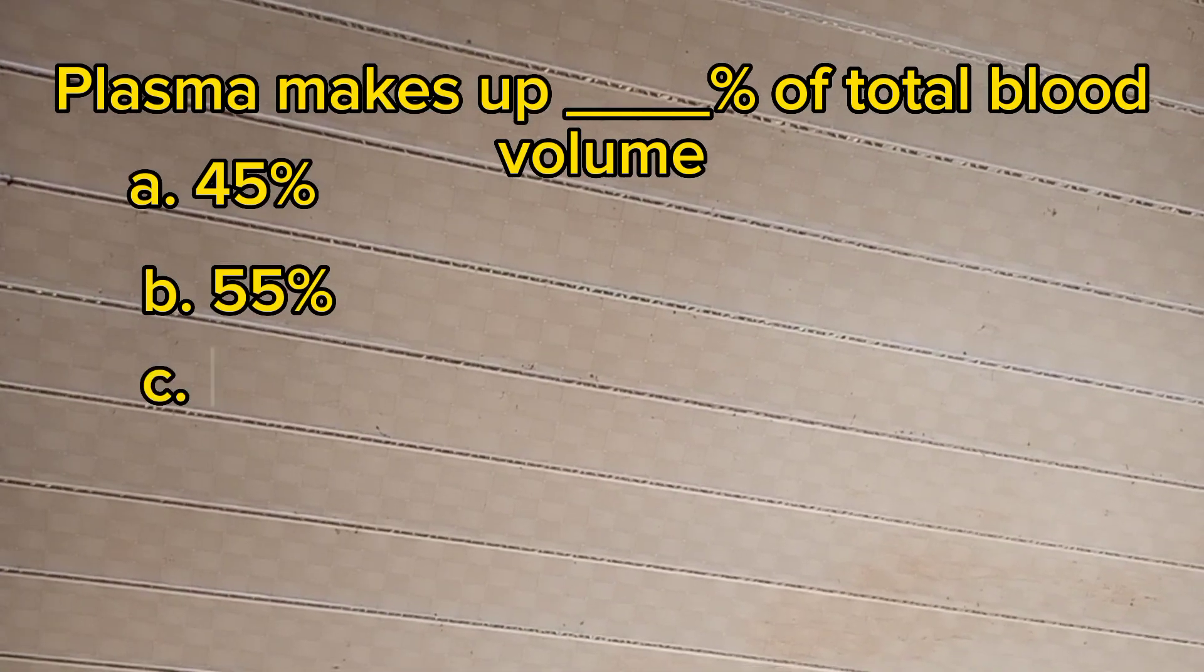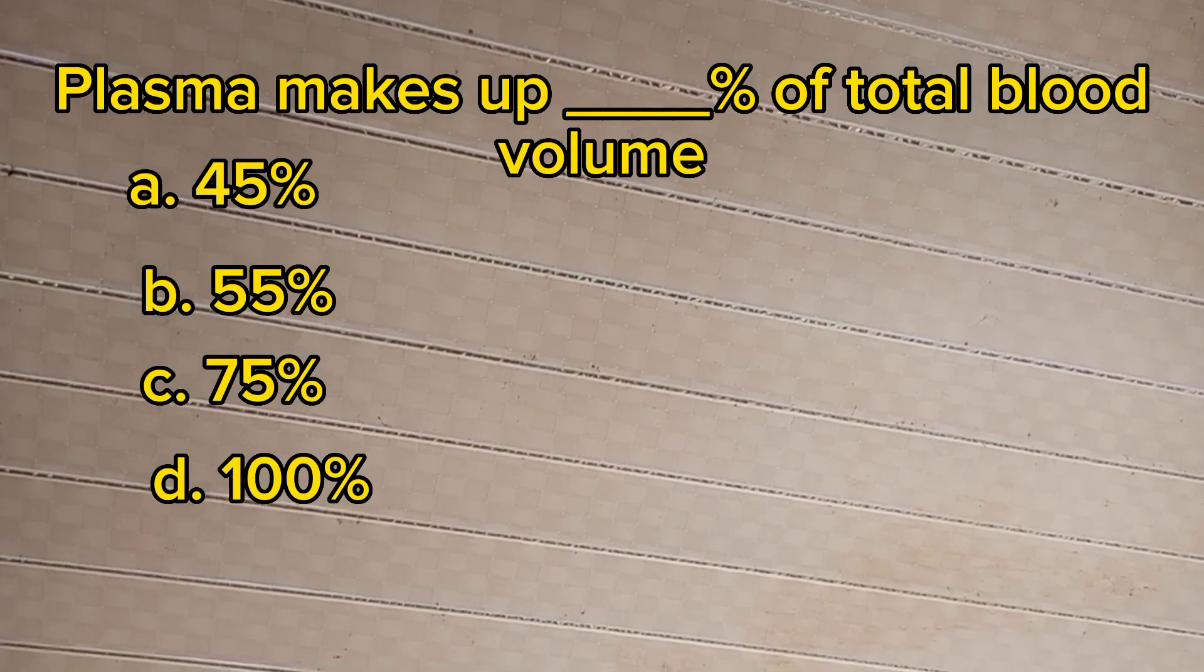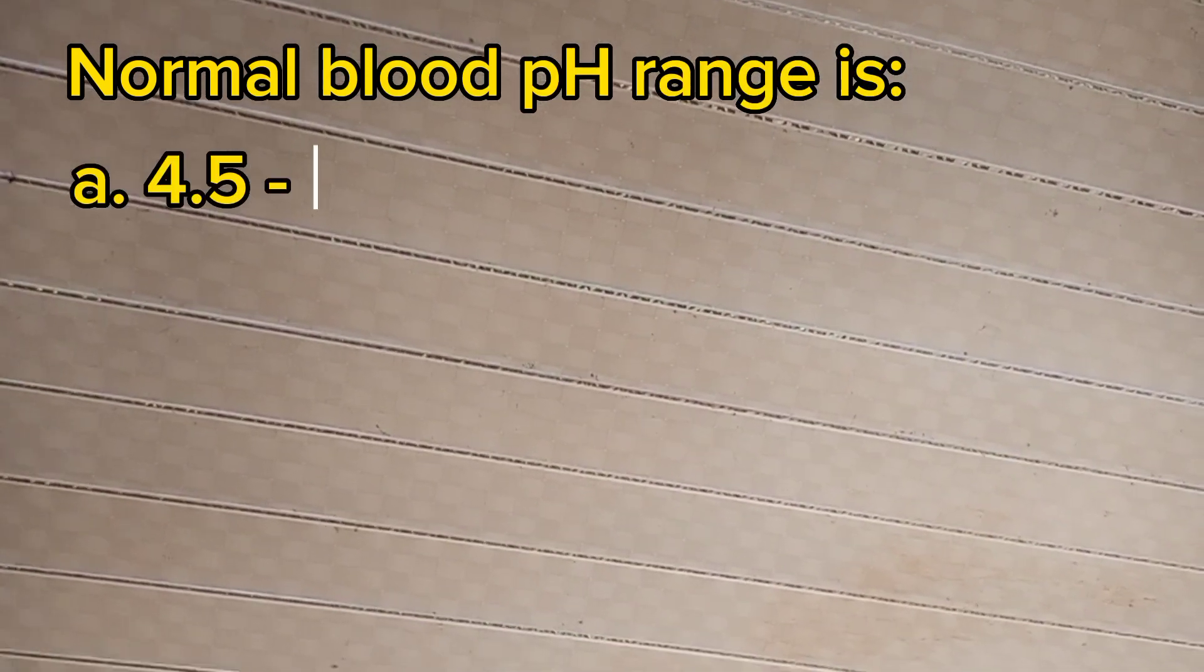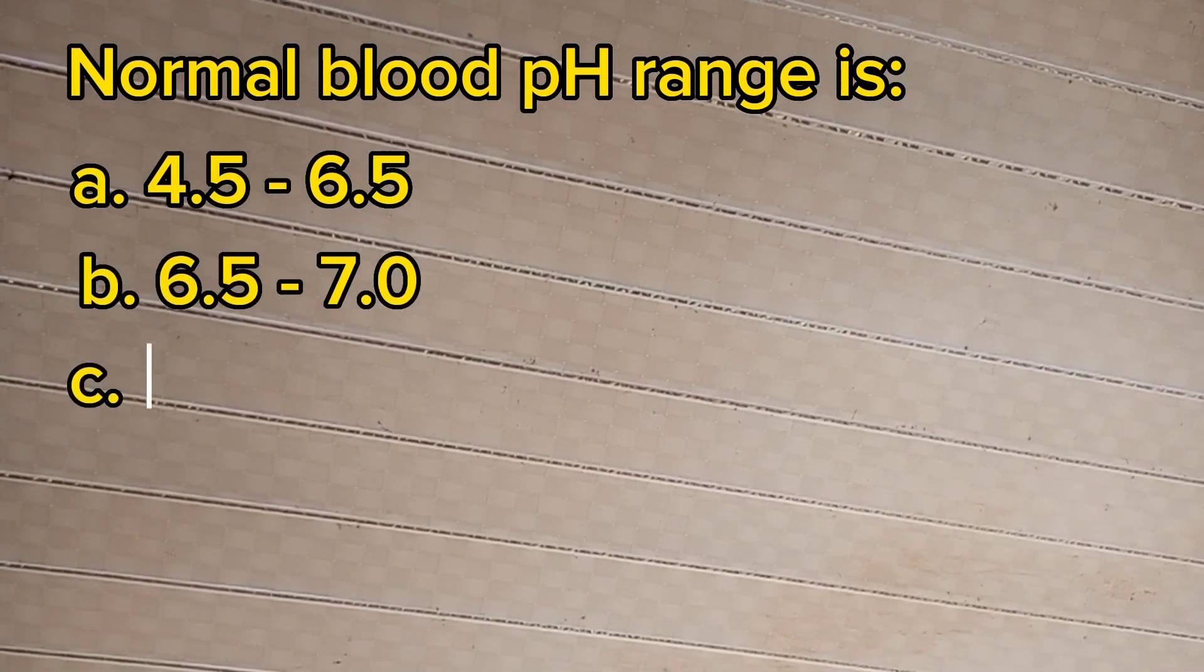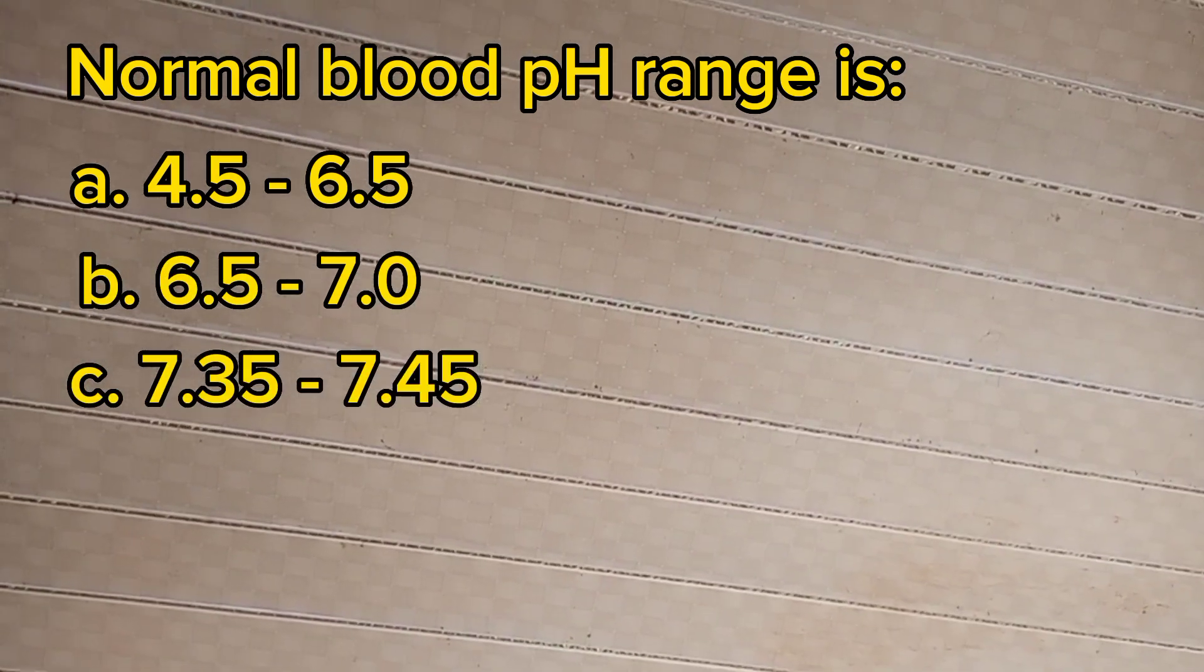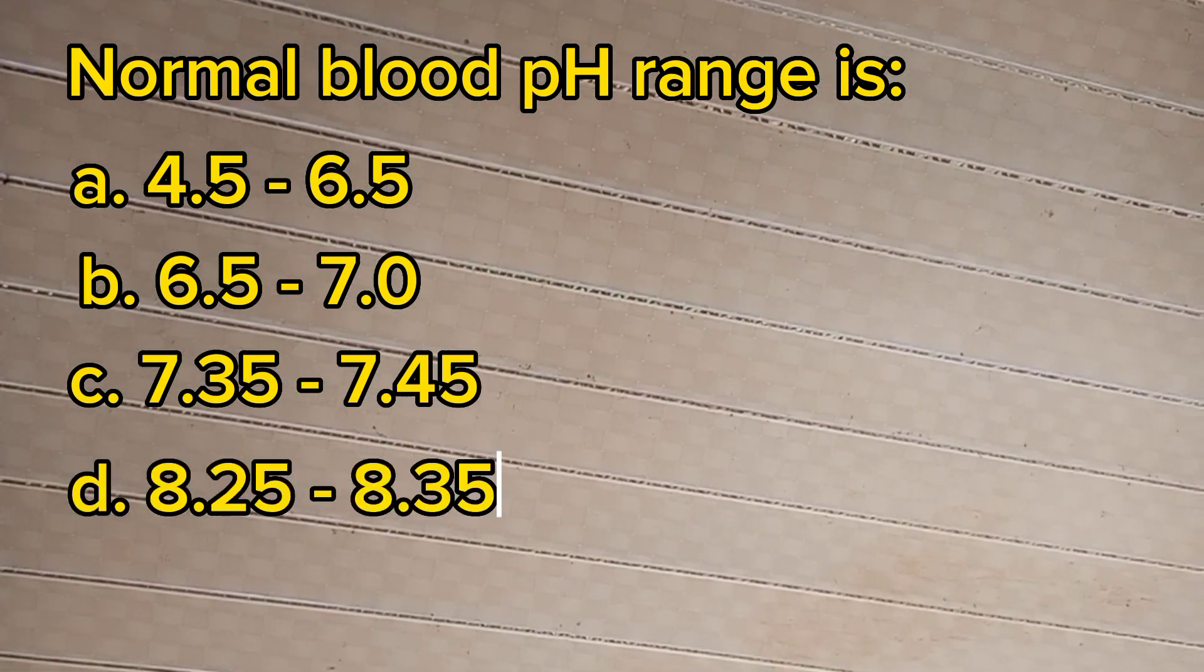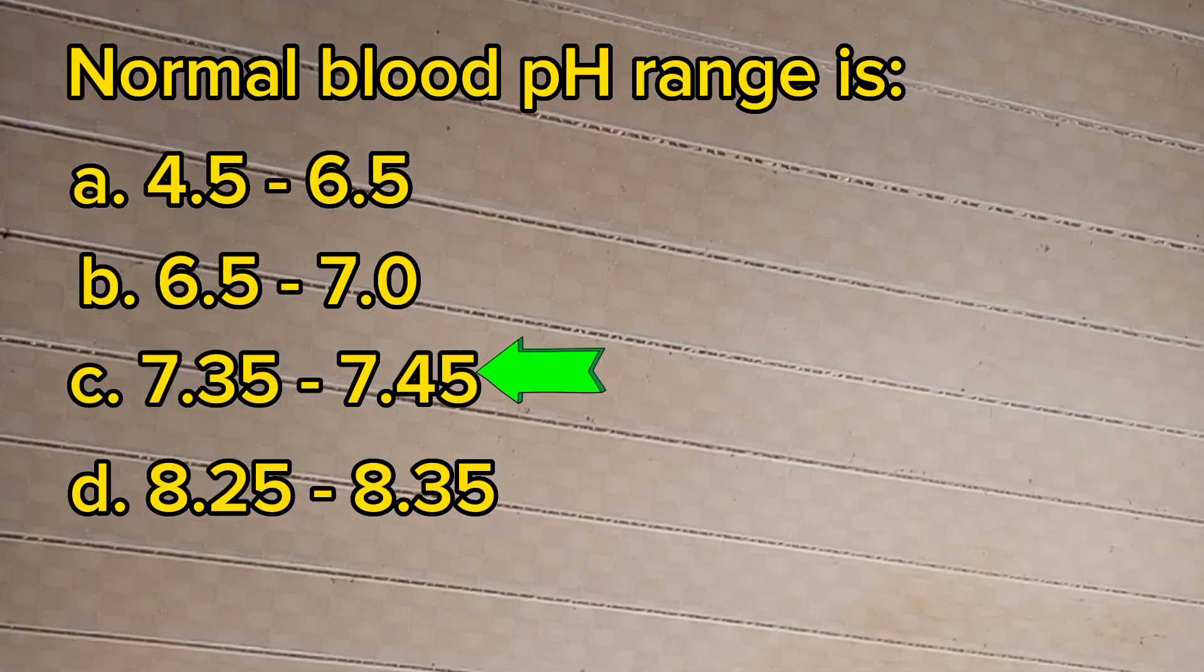C. 75 percent, D. 100 percent. The answer is B, 55 percent. Number five: Normal blood pH range is: A. 4.5 to 6.5, B. 6.5 to 7.7, C. 7.35 to 7.45, D. 8.25 to 8.35. The answer is C, 7.35 to 7.45.